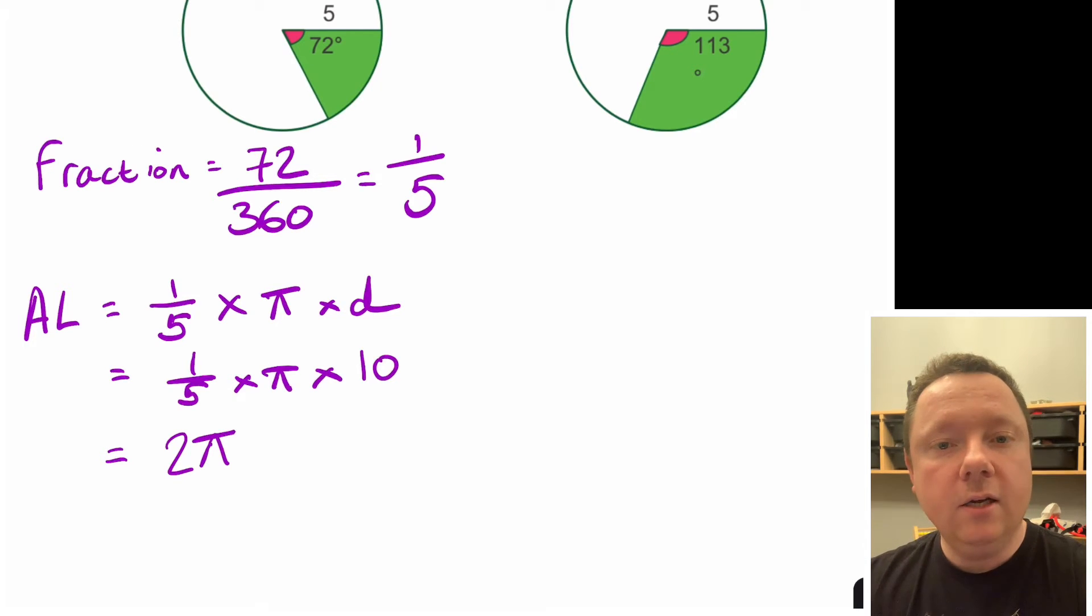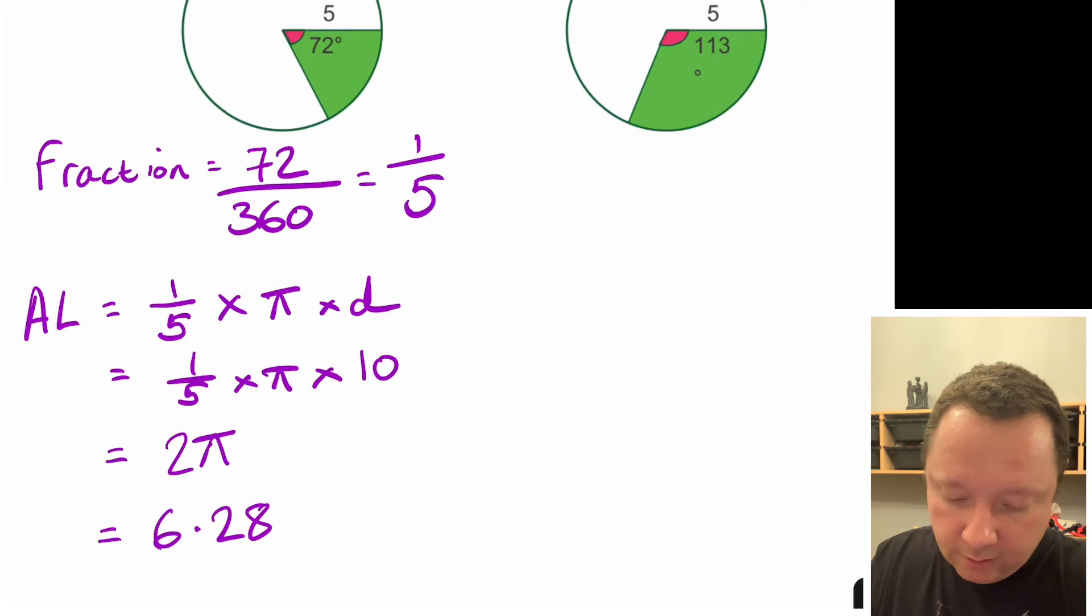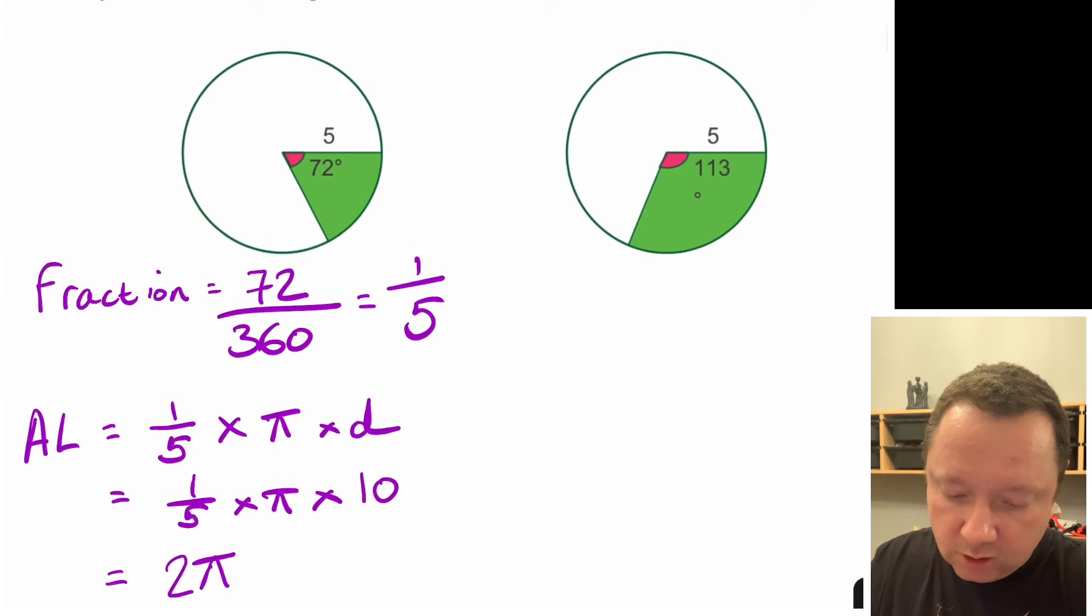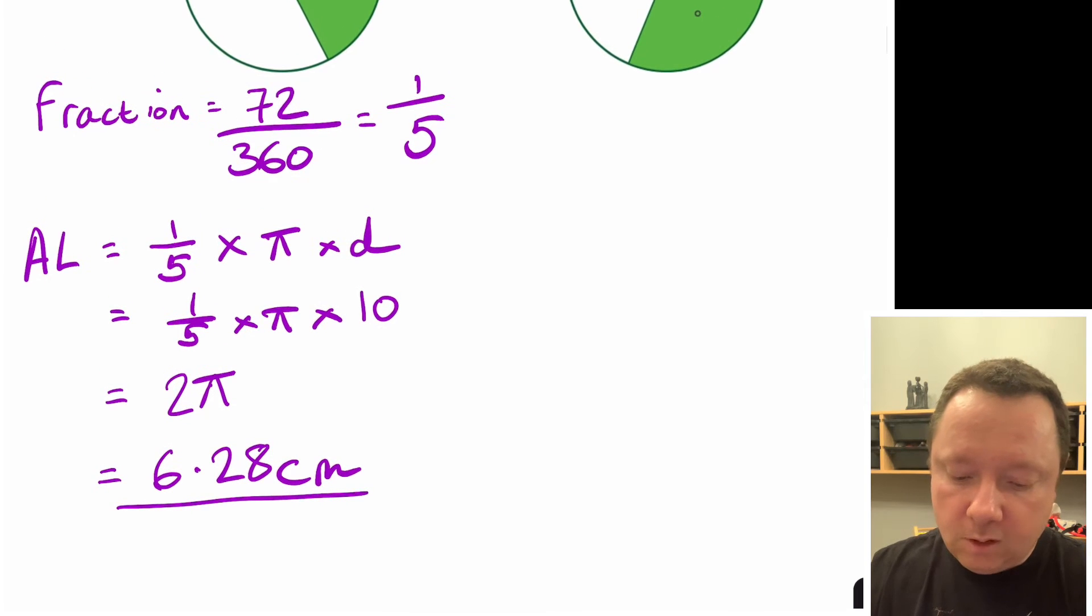If this is a non-calculator question you would leave your answer in terms of pi. So you would leave your answer as 2π. If it was a calculator question you would get your calculator out and do 2 times pi which is 2 times 3.14 which is 6.28 units. We'll call it centimetres for this question. So 2π centimetres or 6.28 centimetres to two decimal places.